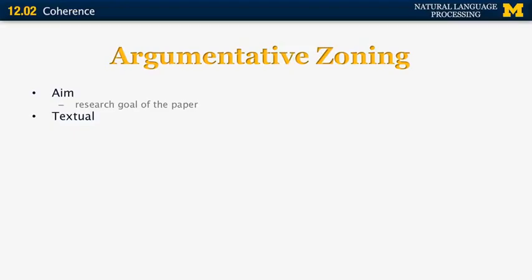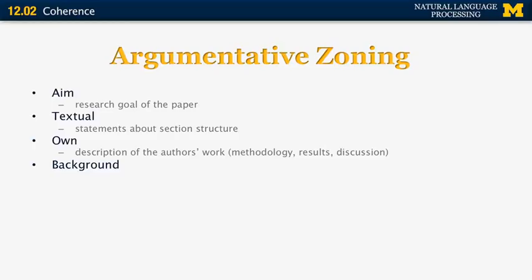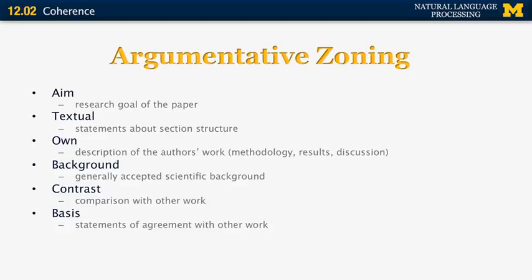Argumentative zoning, introduced by Simone Teufel and Mark Muntz in the early 2000s, is a discourse model for analyzing scientific papers. It uses labels for different zones: AIM (research goal), TEXTUAL (statements about document structure, e.g., 'in the next section we discuss X'), OWN (description of the author's own methodology, results, discussion), BACKGROUND (generally accepted scientific background), CONTRAST (comparison with other work), BASIS (agreement with other work), and OTHER (e.g., descriptions of other researchers' work).